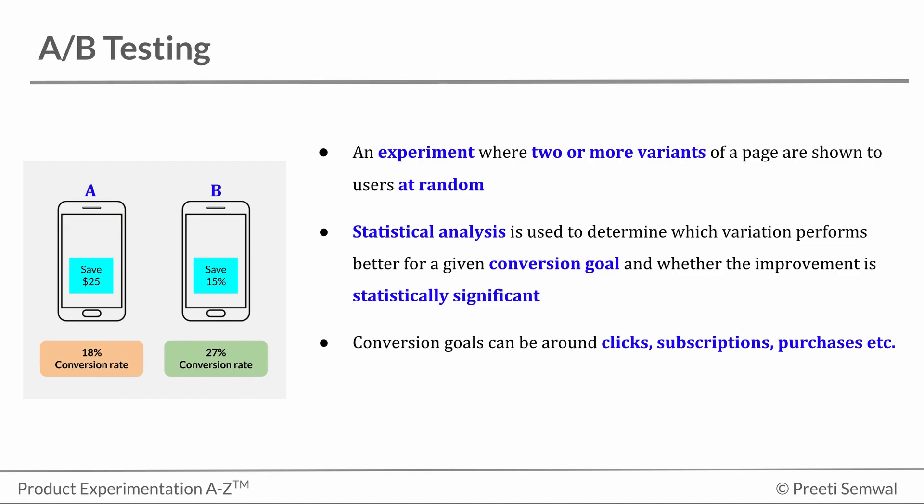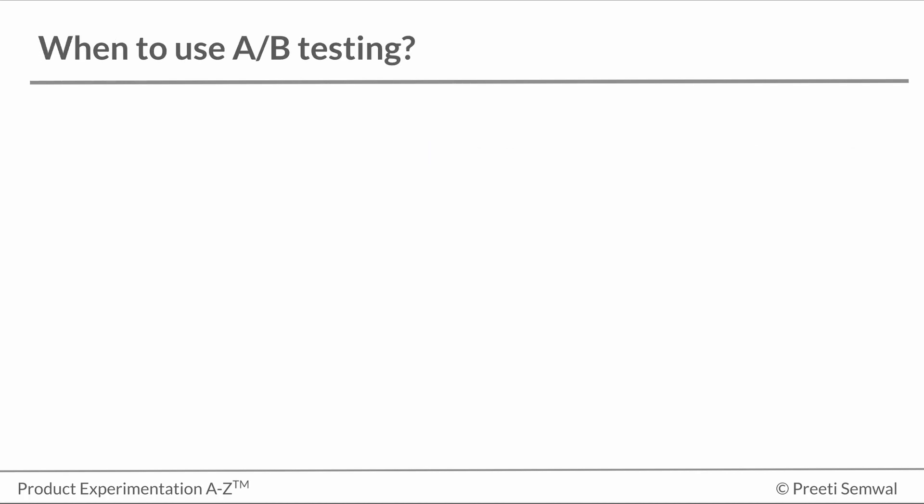The original page, which is basically the business as usual scenario, is also referred to as the control. Now, A-B testing is useful in two types of situations.